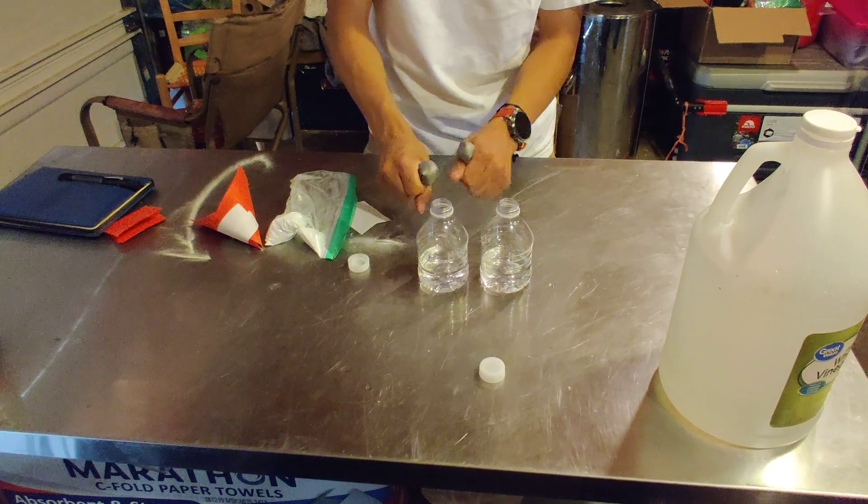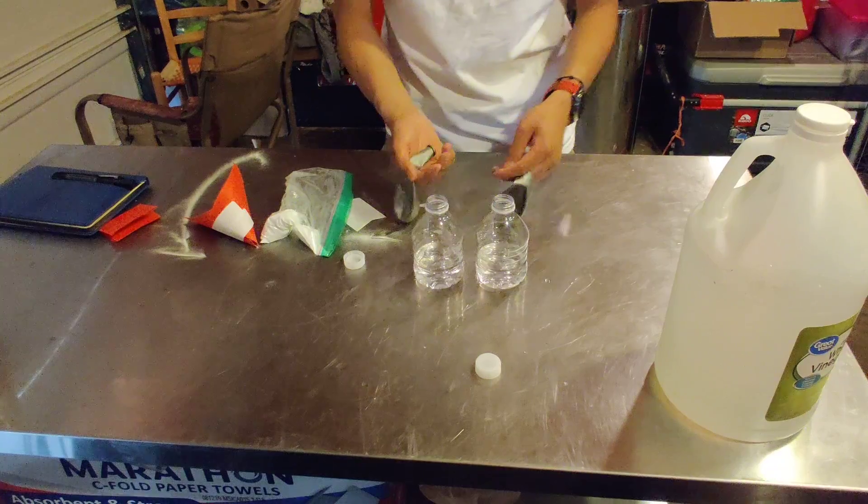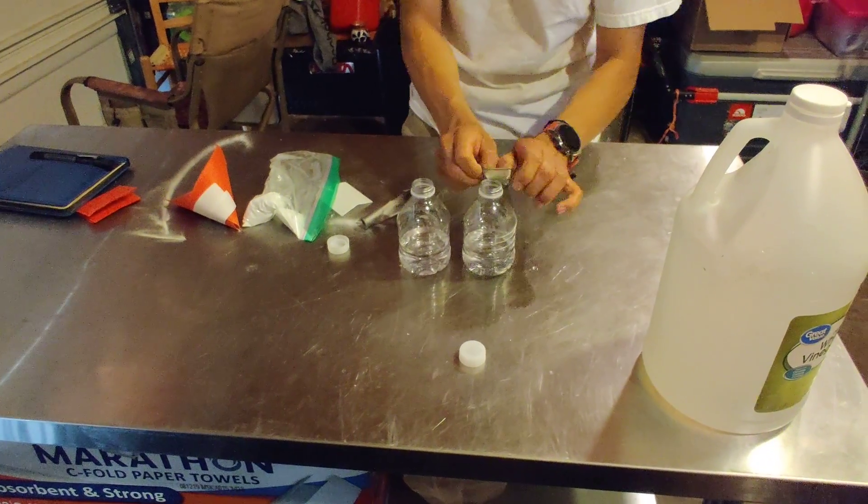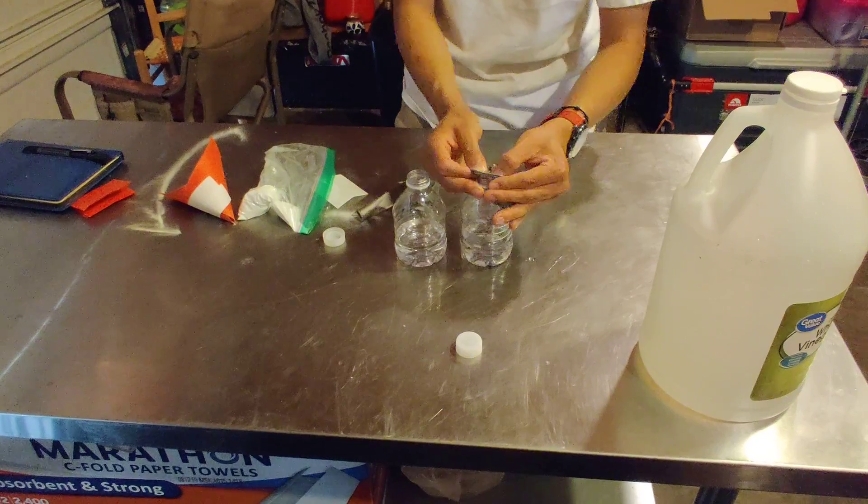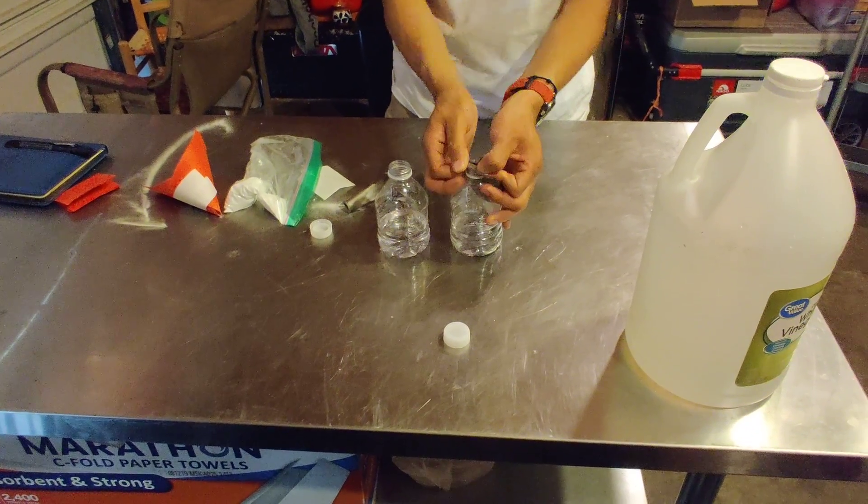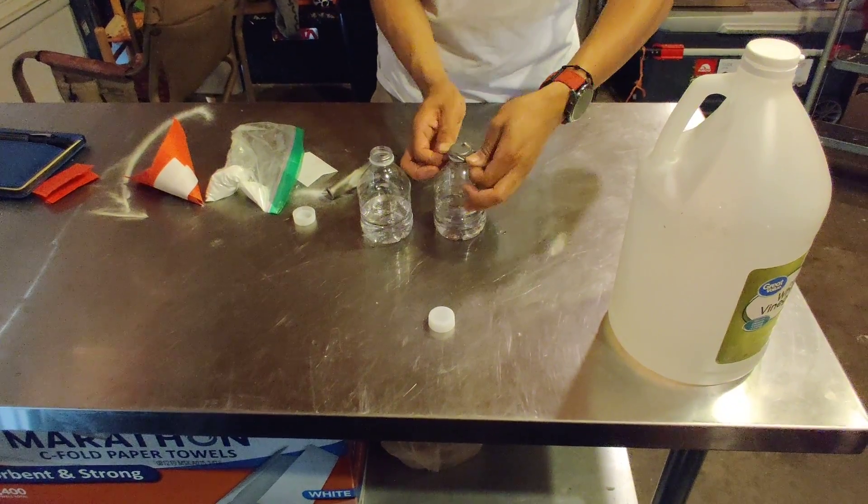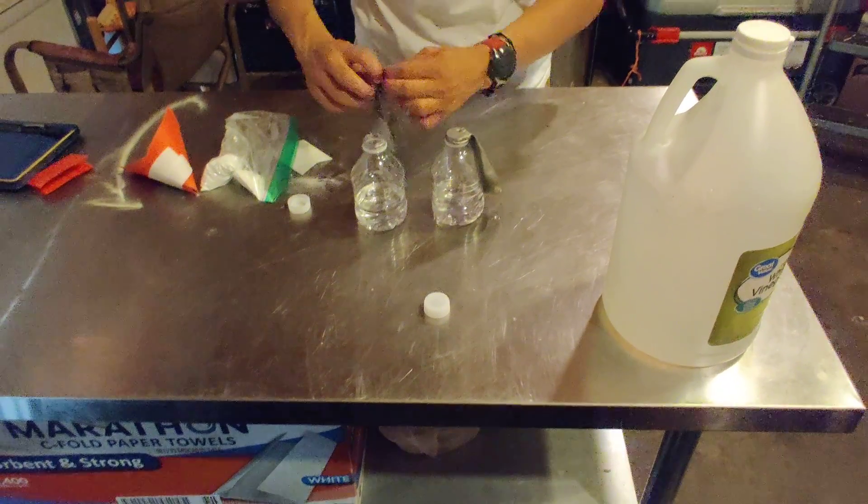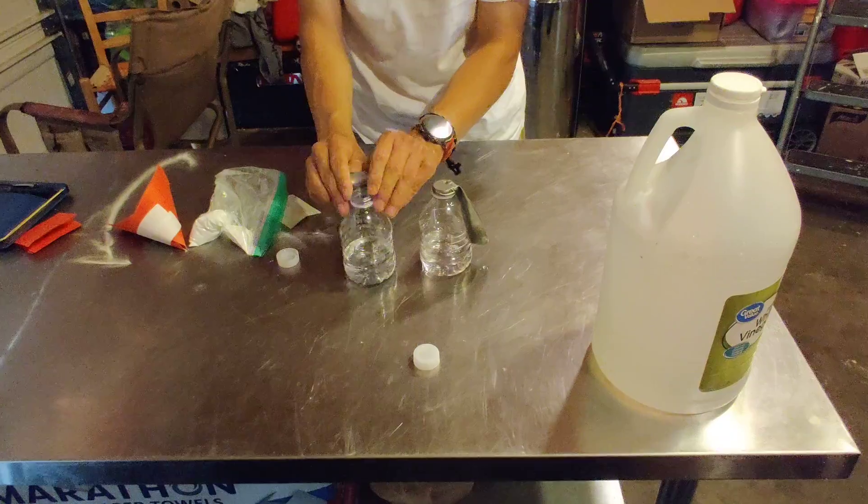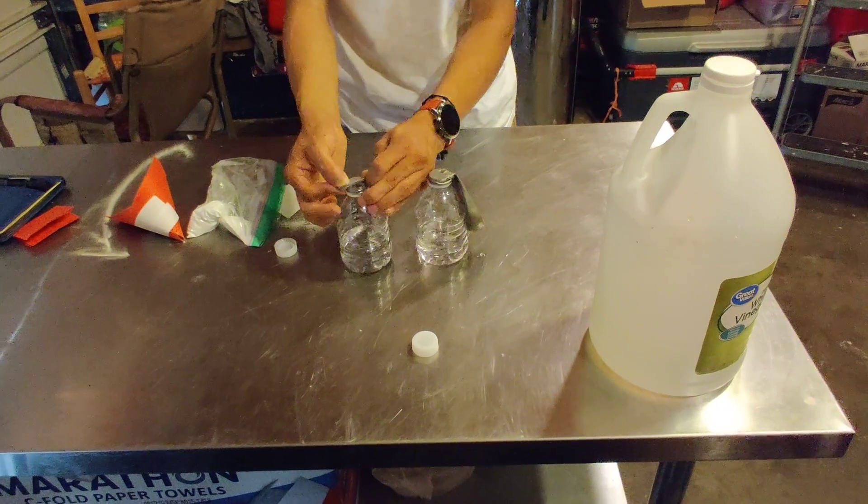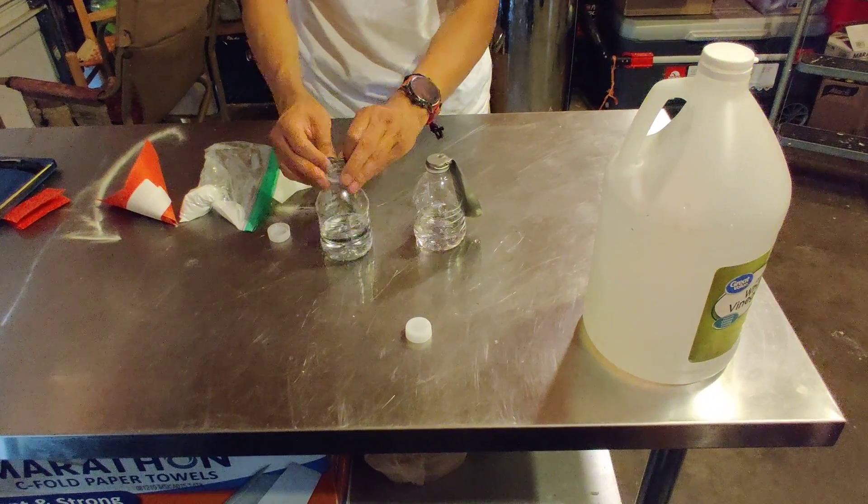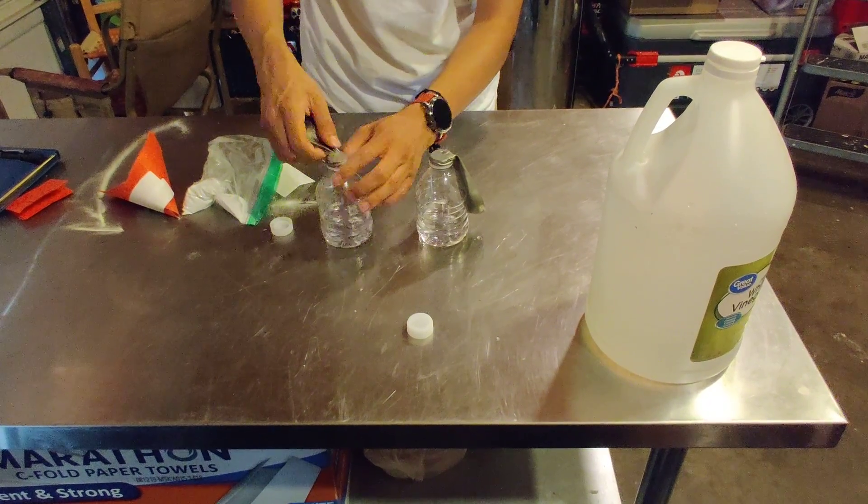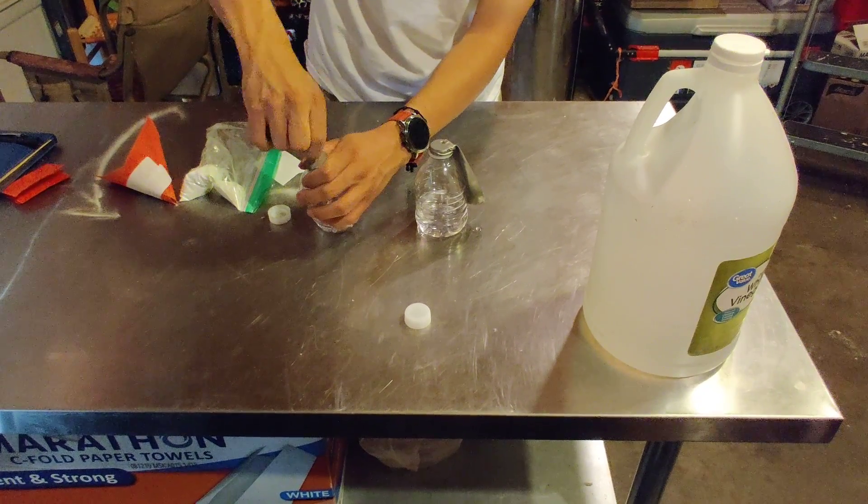And so then the next step is to grab the balloon, put it over the top of the bottle, make sure it's as far down as you can make it go so it doesn't fly off or anything. And then you want to stretch it over so that this is over it.